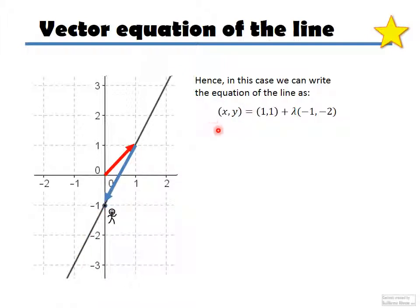(x, y), which are any pair of points that are in this line, is going to be first my position vector (1, 1), plus any number, this lambda here means any number, times the direction vector, which is the vector that moves along the line.